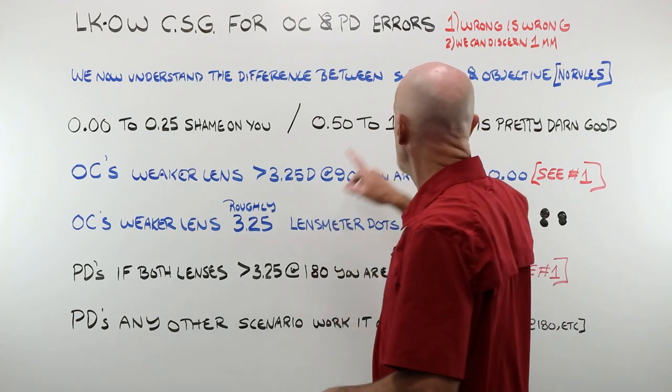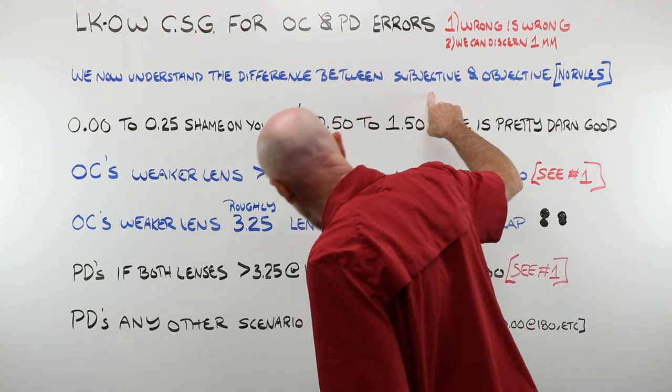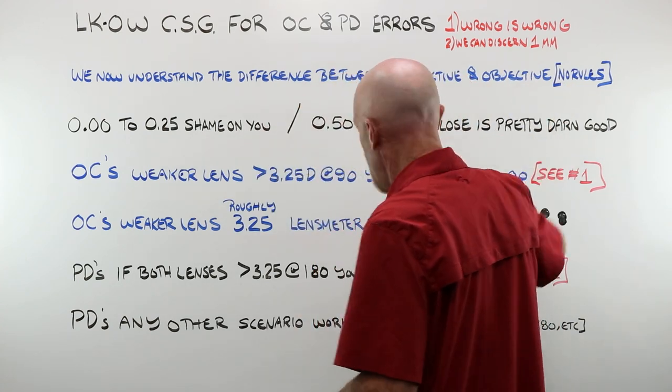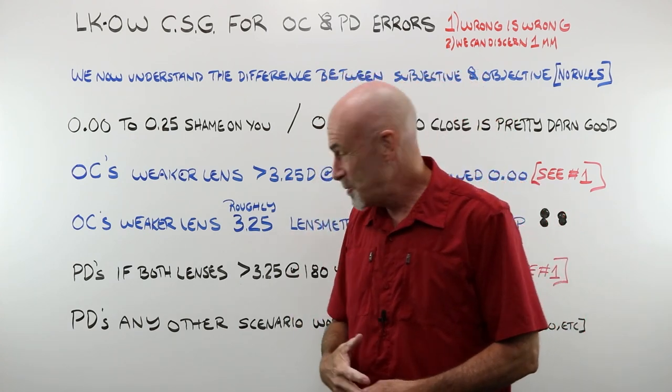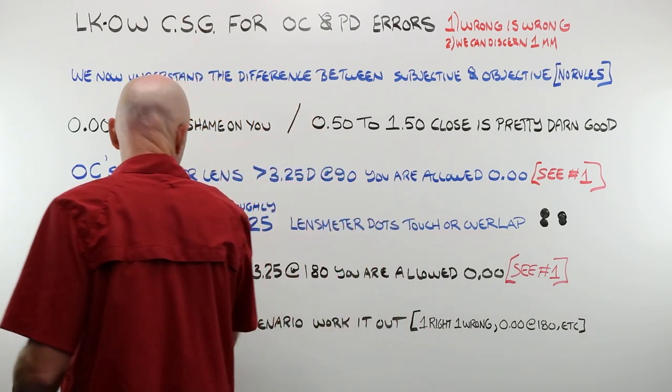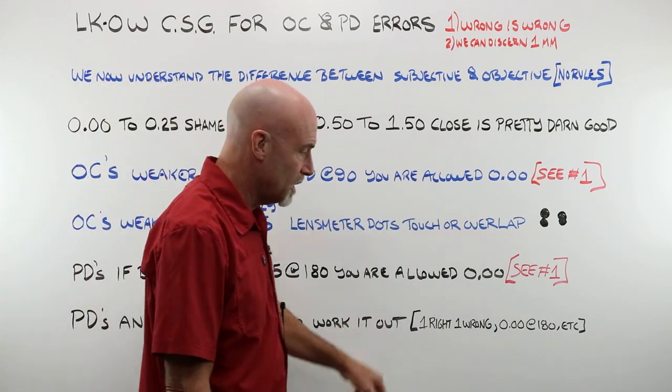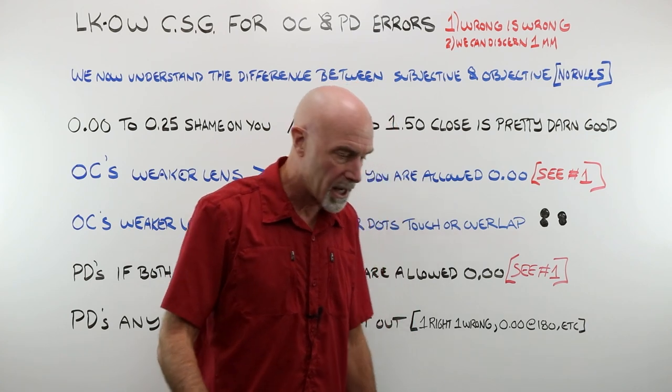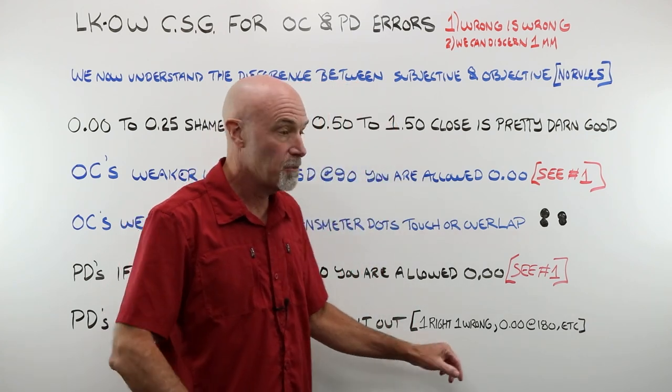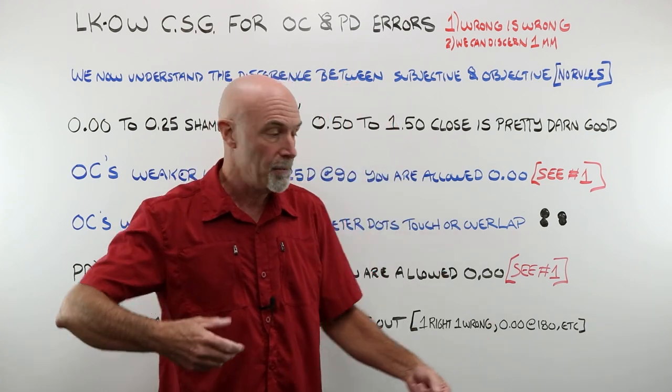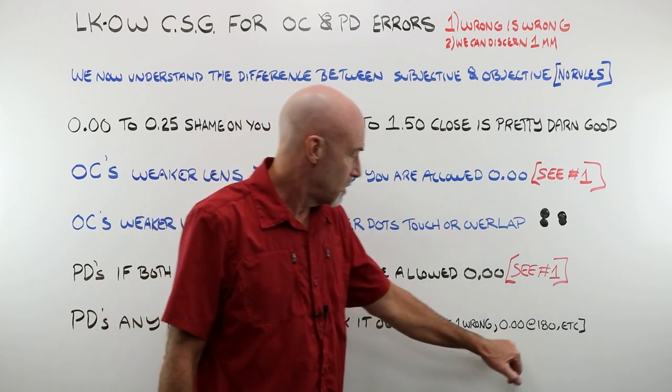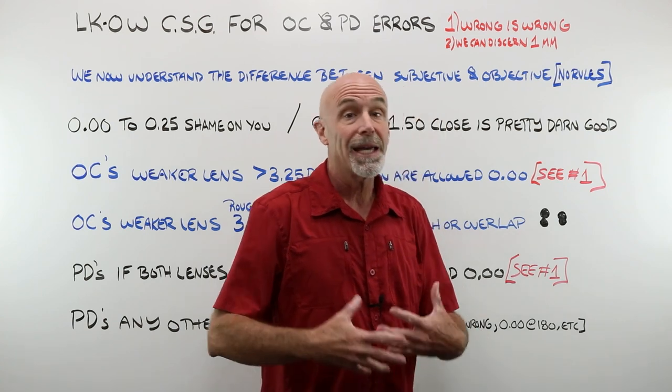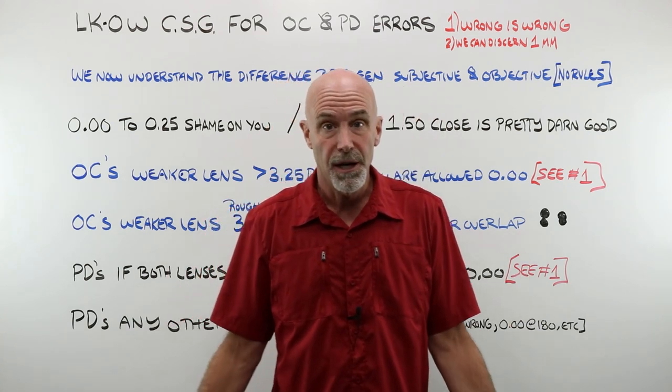Beyond that, because everything we've been talking about is subjective and open to human interpretation and glasses are worn by humans, any other scenario for a PD, you simply need to work it out. And I mean work out the whole thing. Prentice's formula with your prism drawings and your compounding and your canceling. You could have one lens that's right and one that's wrong. You could have Plano at 180. It can't cover all the possible scenarios.